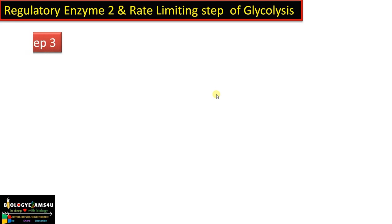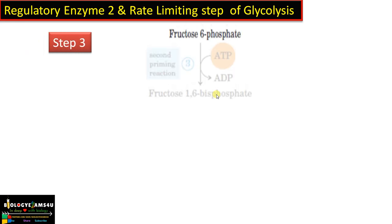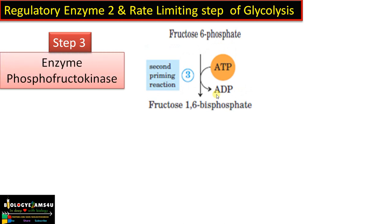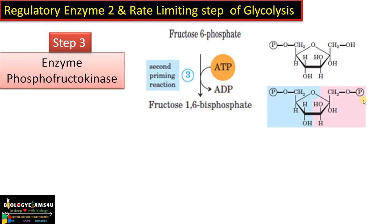Regulatory enzyme 2, and also the rate limiting step of glycolysis, is step 3, where fructose 6-phosphate is converted to fructose 1,6-bisphosphate by the enzyme phosphofructokinase, or PFK. Here also ATP is utilized. Phosphate is added, therefore the enzyme is a kinase. This step is called the rate limiting step of glycolysis, as this reaction is unique to this pathway.